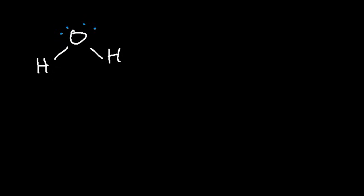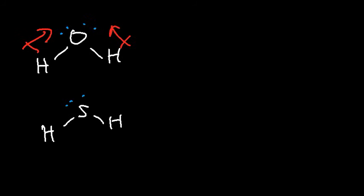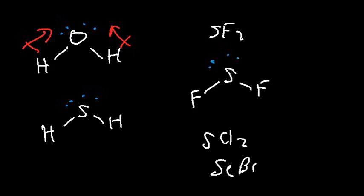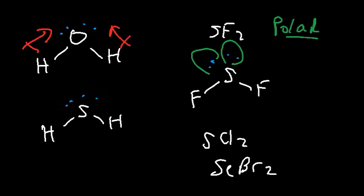Now let's look at molecules with polar geometry. Water has a bent shape and the dipole moments do not cancel — oxygen is more electronegative than hydrogen and the arrows point toward oxygen. Similar molecules like H2S, SF2, SCl2, and SeBr2 also have a bent molecular geometry. The presence of lone pairs contributes to polarity, so all of these molecules are polar with a net dipole moment.